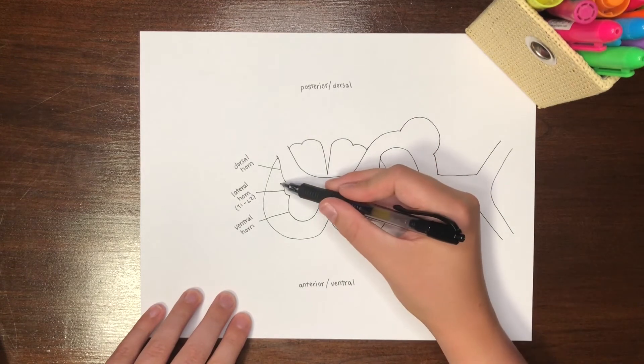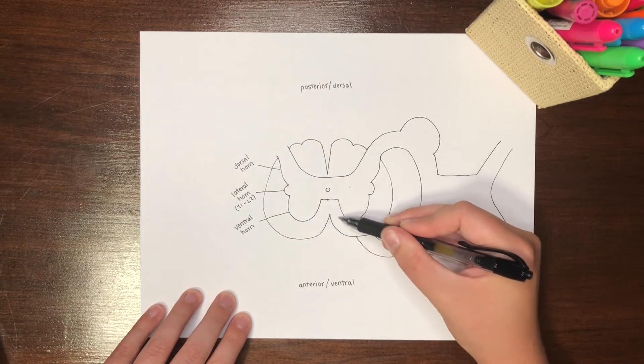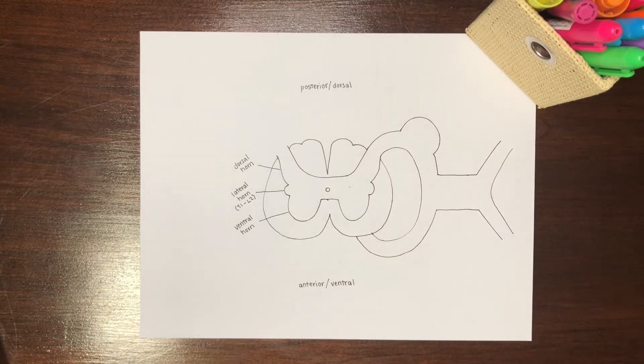The external portion of the spinal cord contains neuron axons organized into white matter tracts. These tissues are named white and gray based on their gross appearance.